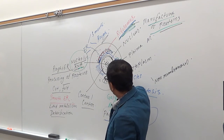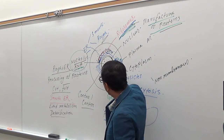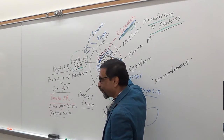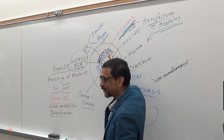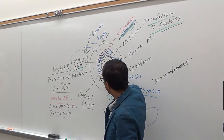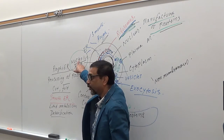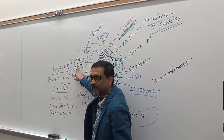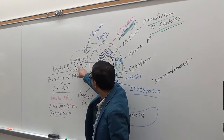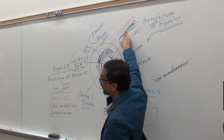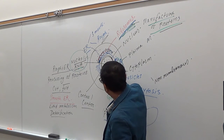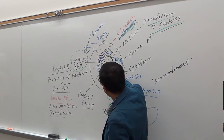The nucleus also has three parts: the nuclear envelope, which is the nuclear membrane; in the center you have the nucleolus, which contains RNA; and you have DNA in the nucleoplasm.